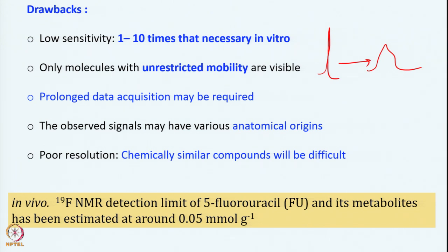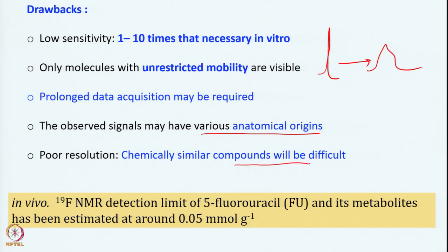Because sensitivity is low and lines are broader, you require longer data acquisition time — many scans have to be done. Another problem is that the signal can come from various anatomical origins. It will not only come from the drug. In some cases, like fluorine, which is a unique nuclei not found in the body, if your drug is fluorine-labeled then you can get a signal exclusively from fluorine. Otherwise, if you are detecting proton or carbon-13, signals will obviously come from different anatomical origin molecules. Resolution will also be poor, so chemically similar compounds will be difficult to distinguish.